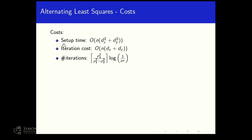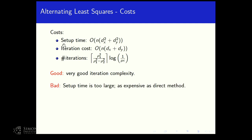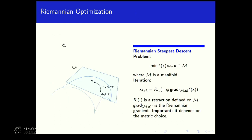The key observation is that the alternating least squares algorithm, while written as alternating least squares, is actually a Riemannian gradient descent algorithm. The setup time is ND^2, but once finished, every iteration takes ND — just one pass of the matrix — and the number of iterations depends on the spectral gap. So the iteration complexity and cost are good; the problem is the expensive setup time.